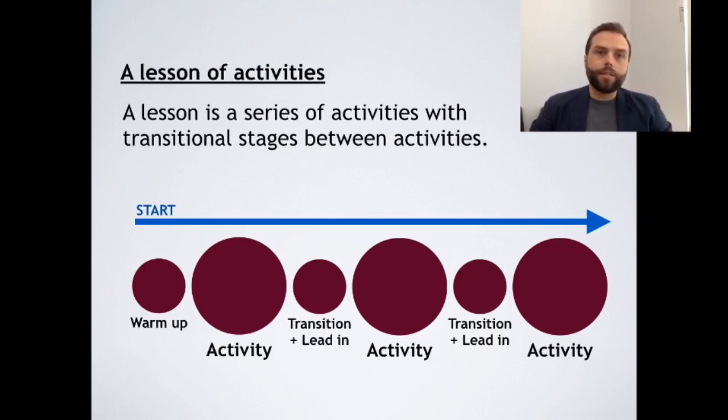The last thing I just want to share with you here is that a lesson is a series of activities with transitional stages between activities. That's really what a lesson is, is a series of linked activities. So the way I think about this is quite visually. So I've made this visual thing to show you. Going from the start, moving on, here are three activities. You can see the activities are the large circles. In between the circles are small circles, and the small circles are these transitional post and lead-in stages. You've got warm-up, activity, transition, lead-in, and the next activity. Transition, lead-in, next activity. Think about a lesson as a series of these large steps and smaller steps. I hope that gave you some good ideas about the activity route map and the basic building block of building your lessons. Thank you very much.